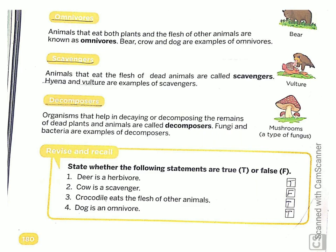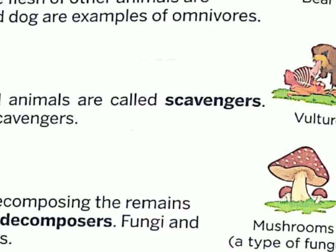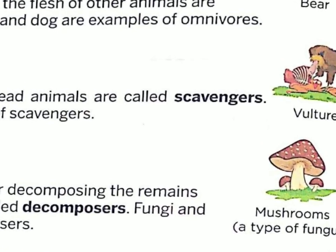Scavengers — what are scavengers? Animals that eat the flesh of dead animals are called scavengers — woh animals jo mari huyi janwar ka flesh eat karte hain, unhain scavengers kaha jata hai. Hyena and vulture are examples of scavengers. Here the image of vulture is given, and he is eating the flesh of a dead animal.